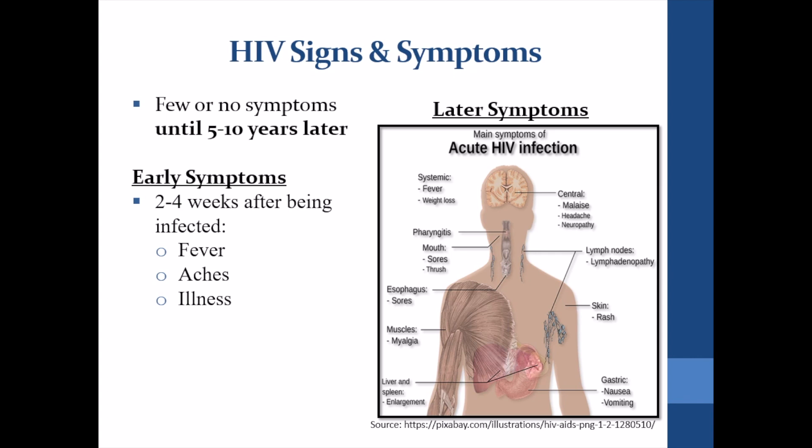People with HIV do not usually have symptoms right away. Sometimes it can take up to five to ten years for someone to have symptoms. However, in the first two to four weeks after infection, one may feel feverish, achy and sick. The early symptoms last for a short while, after which there are no symptoms for years. Later symptoms include fever, weight loss, headaches, and skin rash, among others.